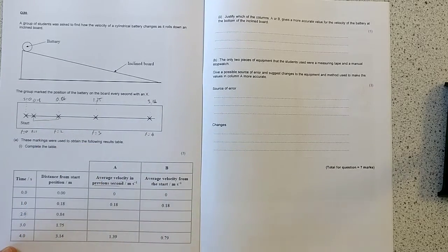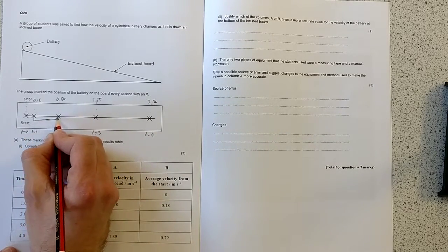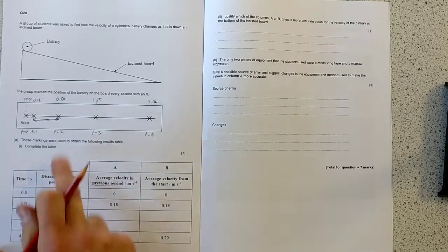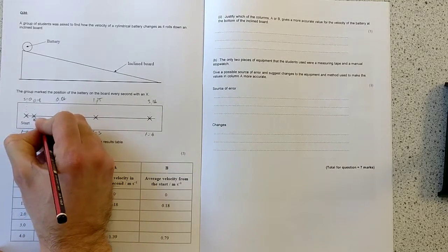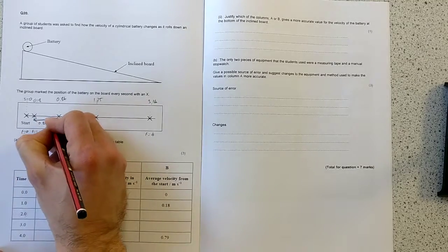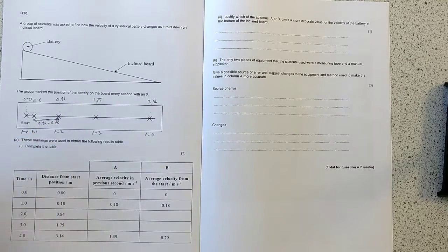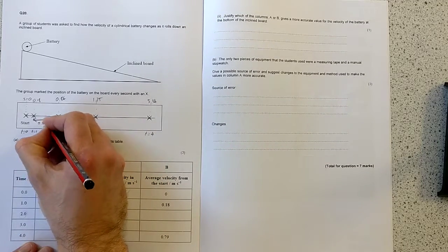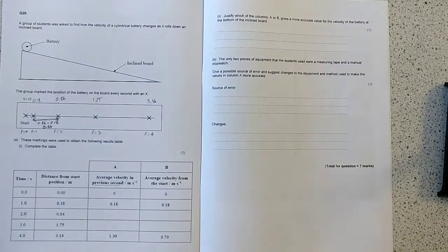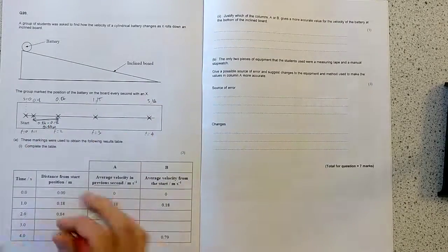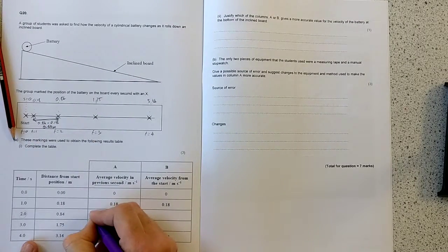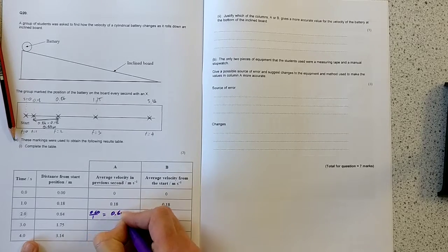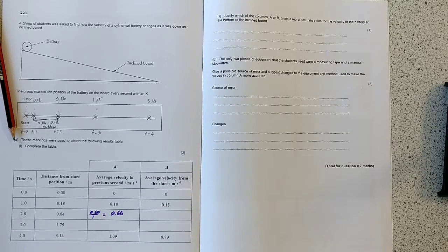Average velocity in the previous second. So, this distance here is 0.84 minus 0.18, which is 0.66 metres. So, my average velocity is going to be 0.66 divided by 1, which of course is 0.66 metres per second.